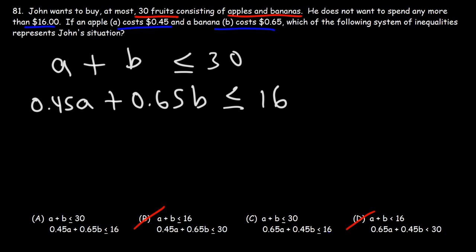So should we eliminate A or C? Notice what number we have next to A. We have 0.65 instead of 0.45. So answer choice C can be eliminated. Therefore, A is the correct answer. It matches up with exactly what we have. Sometimes you might be given a situation and you need to write a system of inequalities that correspond to that situation.